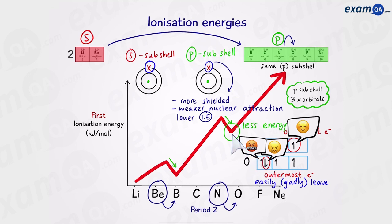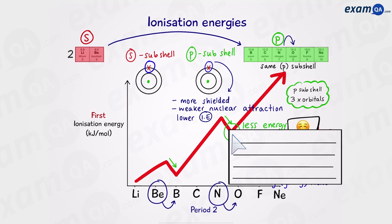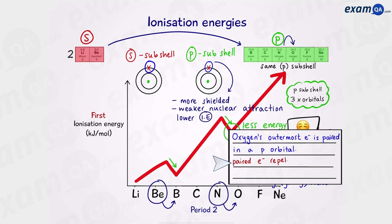So how do we explain this? Oxygen's outermost electron is paired in a P orbital. Paired electrons repel each other, and therefore less energy is needed to remove this electron. So we've covered two trends in ionization energies. In the next video, we're going to look at the third one.